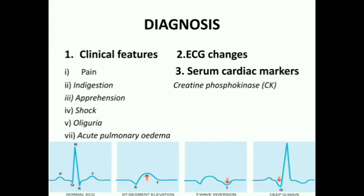Regarding diagnosis, myocardial infarction can be diagnosed on the basis of three parameters. First are clinical features: pain, indigestion, apprehension, shock, oliguria — where urine flow is usually less than 20 ml per hour — and acute pulmonary edema.